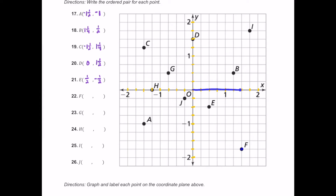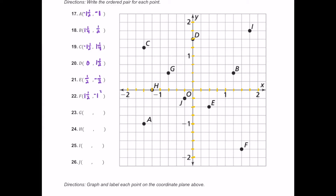F is down here in quadrant four. Start at the origin and move one and a half to the right — so positive one and a half. Then move down one and three quarters — so that's negative one and three quarters. Positive one and a half is the x value and negative one and three quarters is the y value.